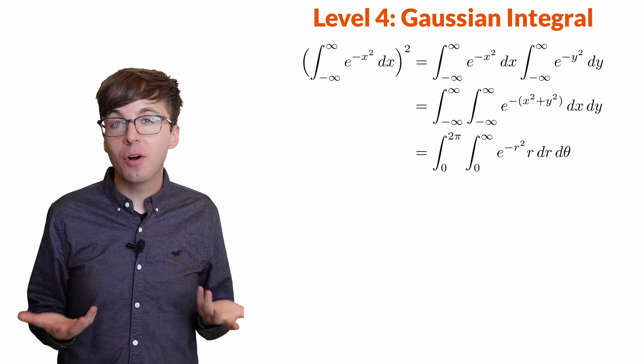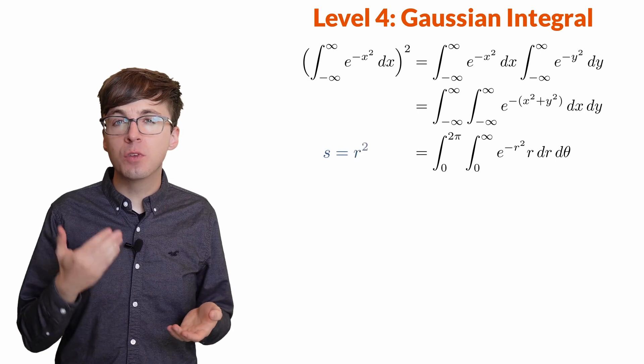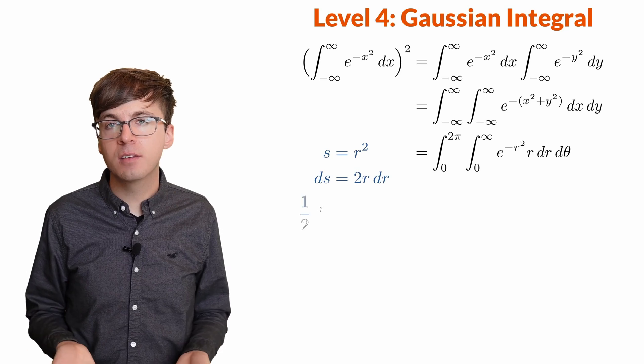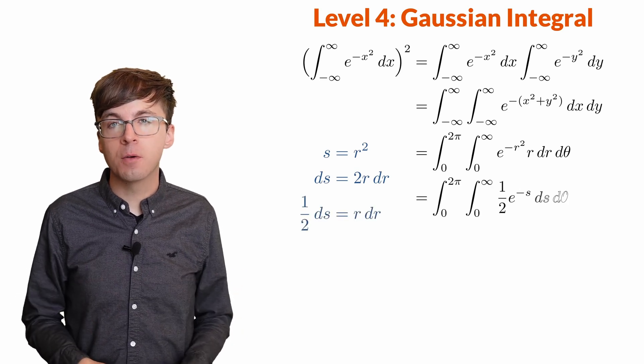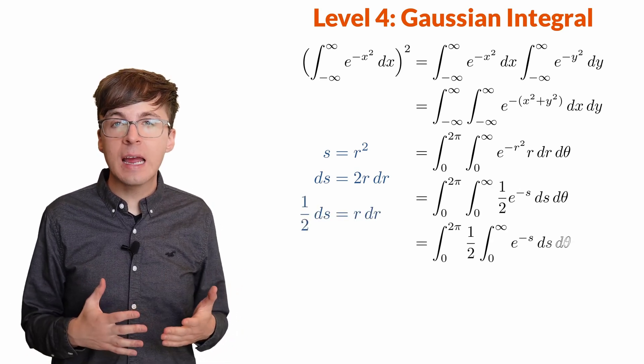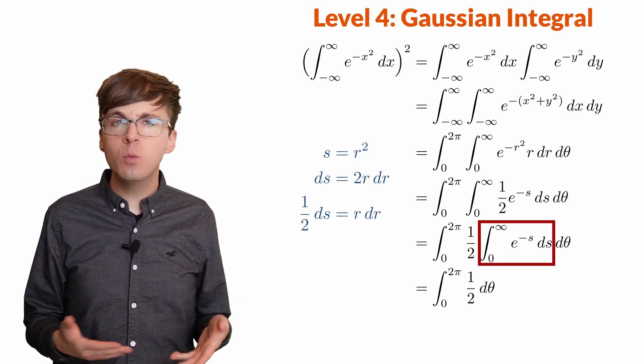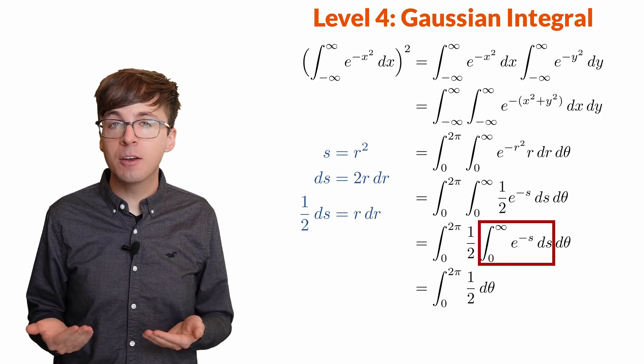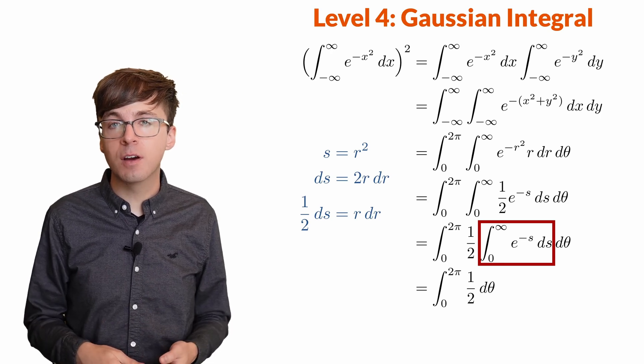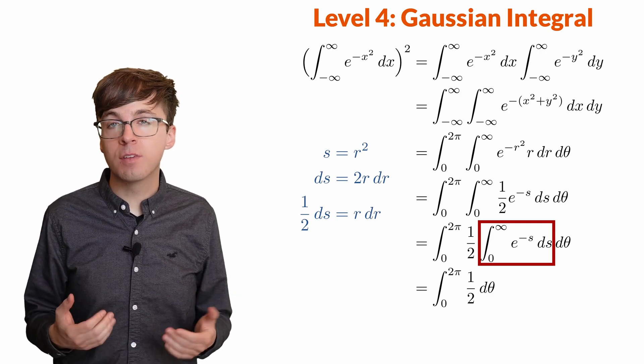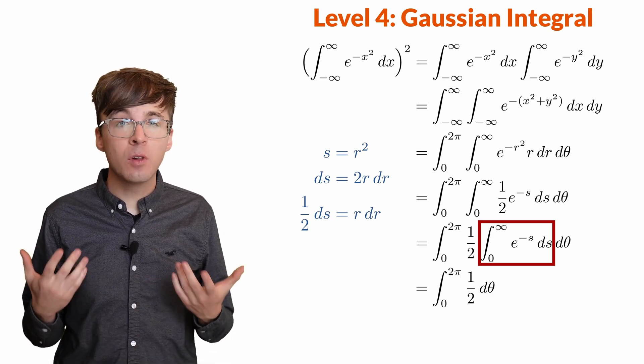Let s equal r², so ds equals 2r dr. We can solve for r dr equals 1/2 ds, and now this is our double integral. We can factor out the 1/2, and this inner integral is now 1. In probability, we know this because it's the integral of a probability density function over its support, the part of the domain where the function is not 0. And that will always be 1.